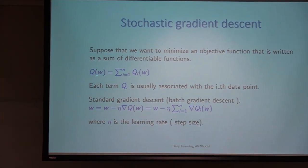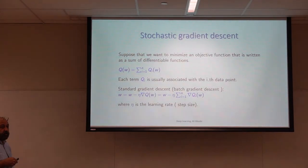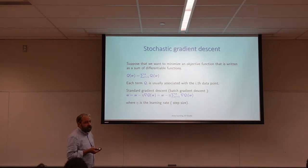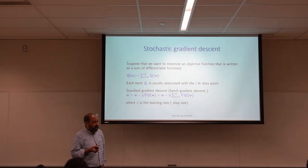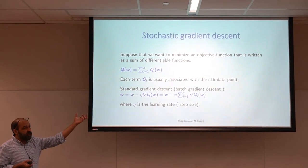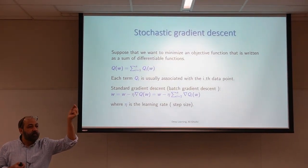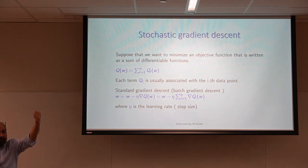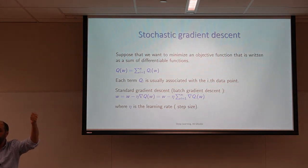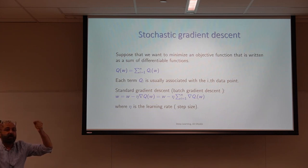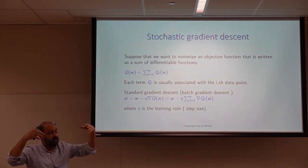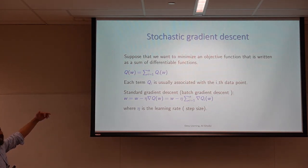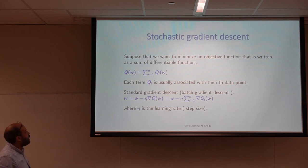If you have a function q which can be written as the summation of some qi's, that is the case for any loss function. A loss function is usually a cost for one particular data point — some measurement between the ground truth and the prediction for one single data point — and the whole cost function is the summation of this cost over all points. So the loss function can be written as a summation of qi's.